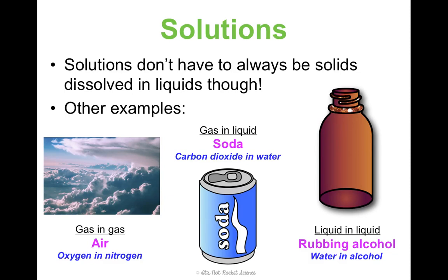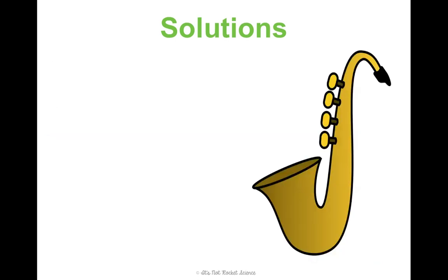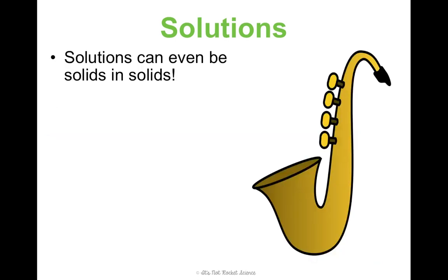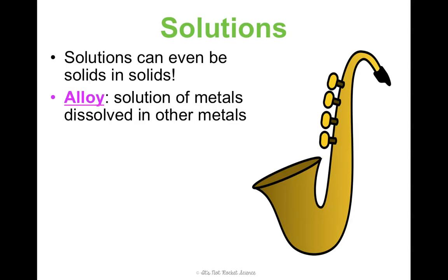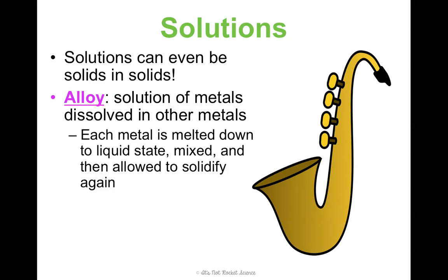What I think is really interesting too is that solutions can even be solids in solids — that's called an alloy. It's a solution of metals dissolved in other metals. In order to make an alloy, you do have to melt them down to their liquid state, mix them, and then allow them to solidify again. A couple of examples: bronze is a solution of copper and zinc.